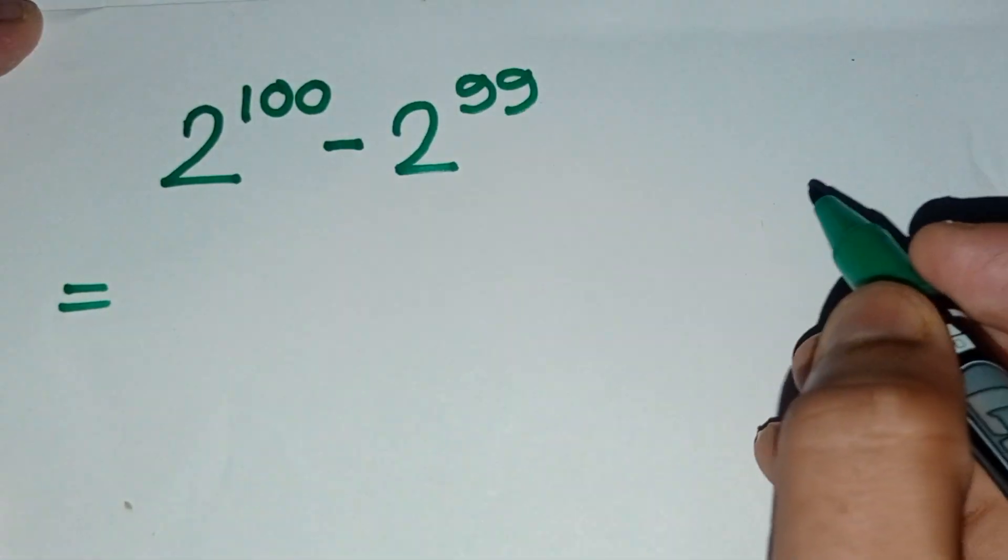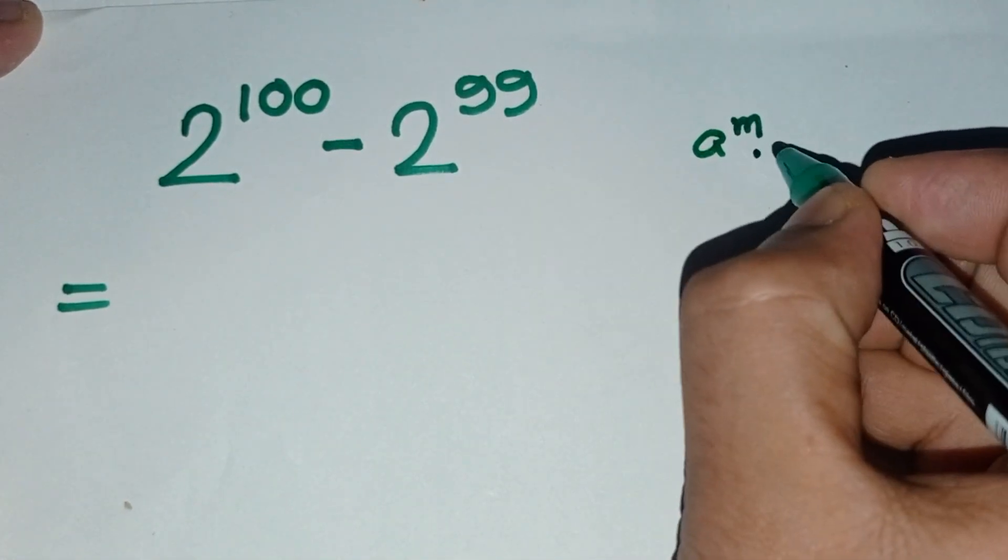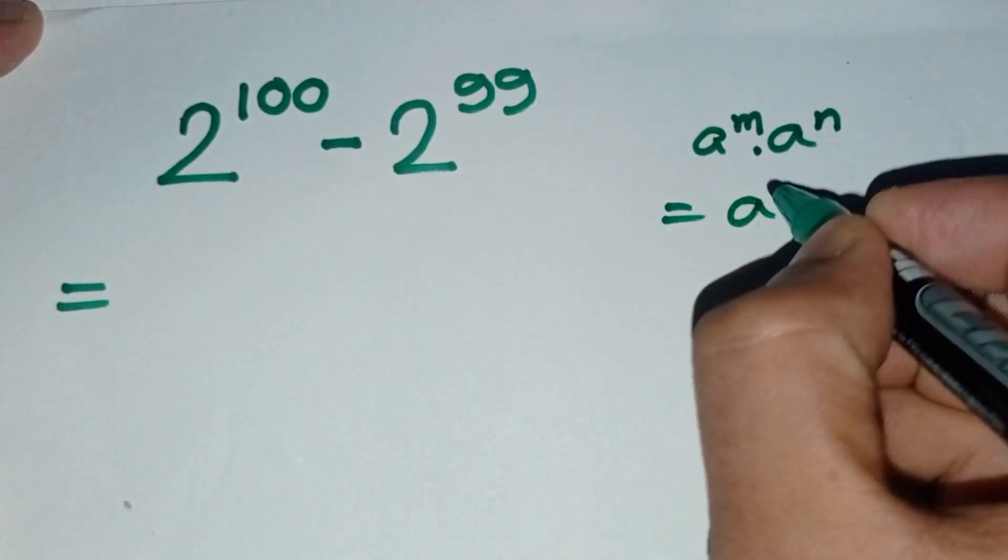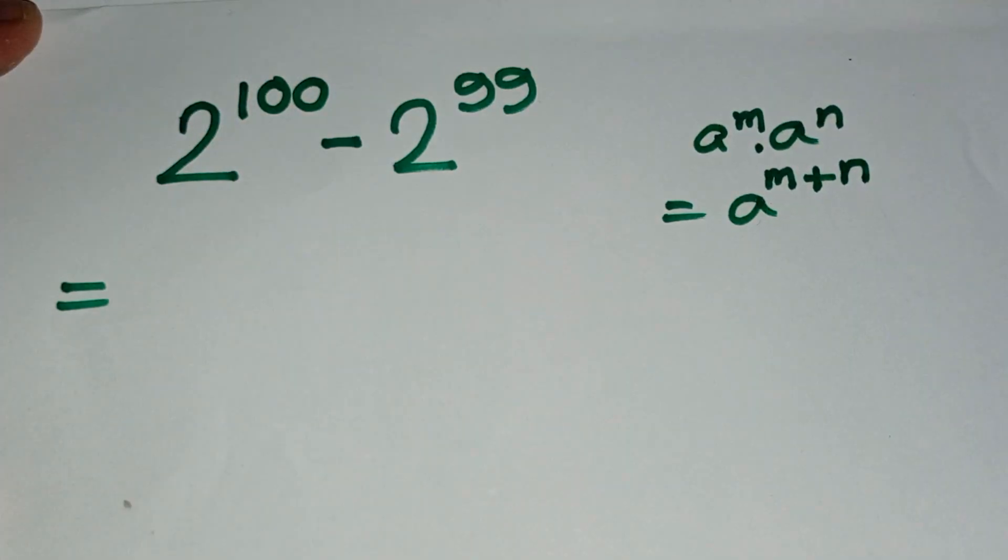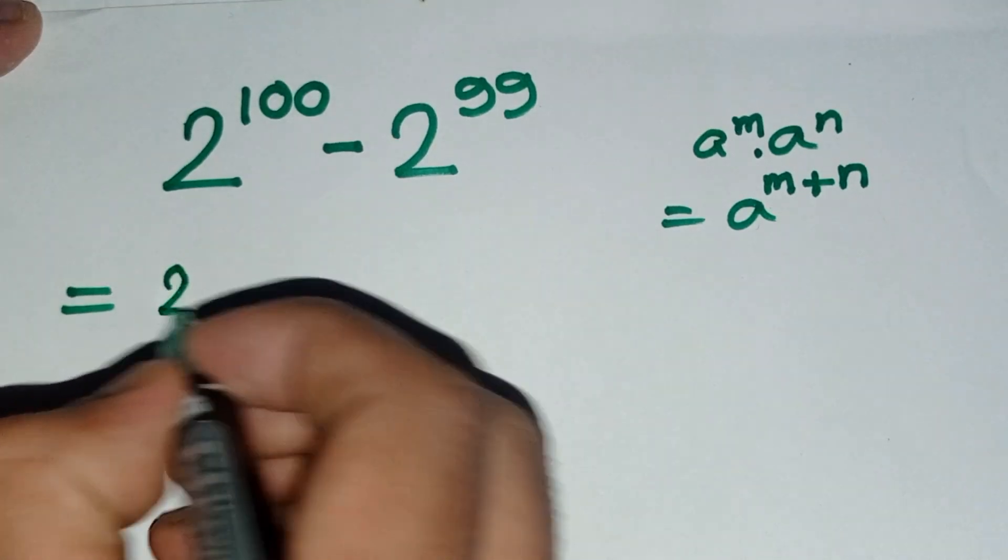We know a formula: first of all, a to the power m times a to the power n equals a to the power m plus n. Okay, so we can write 2 to the power 100 as 2 to the power 99 times 2 to the power 1 minus 2 to the power 99.